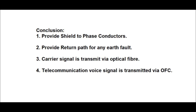In conclusion: number one, the earth wire provides shielding to the phase conductors of the transmission line. Number two, if the horizontal span between phase-to-phase conductors is more, instead of one earth wire, two earth wires are used — mainly at voltages above 400 kV. Number three, it provides the return path for any phase-to-earth fault in the transmission line. Number four, carrier signals are transmitted via optical fiber. Number five, apart from carrier signal transmission, it provides telecom communication and voice signal transmission via OFC — optical fiber cable.